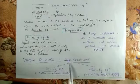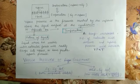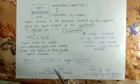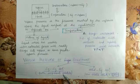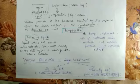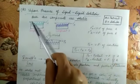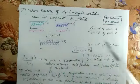Now we move to the next topic: vapor pressure of solution. We will discuss two types of solutions. The first is liquid-liquid solution, where both components are volatile — meaning both change into vapor state; the solute is also liquid and the solvent is also liquid. The second is solid-liquid solution, where the solute is non-volatile (solid) and the solvent is volatile. The first case we will discuss is vapor pressure of liquid-liquid solution, where both components are volatile.